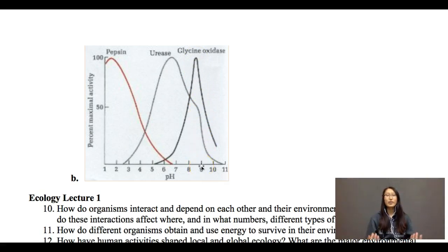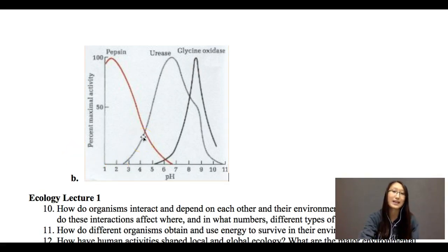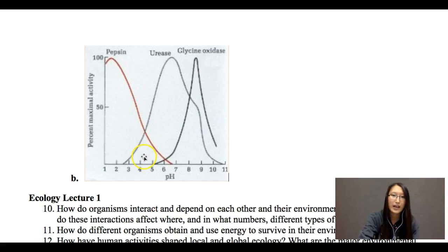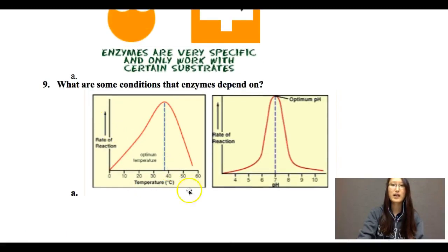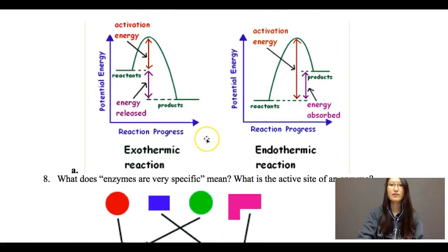The optimal pH for pepsin is about 2, the optimal pH for urease is about 6.5, and the optimal pH for glycine oxidase is about 9. At what pH do these enzymes have the same amount of activity? That's where you see where the graphs intersect. Pepsin and urease have about the same activity at around pH 4.3. Urease and glycine oxidase have the same reaction rate at about pH 8. You need to know how to read all of these graphs.